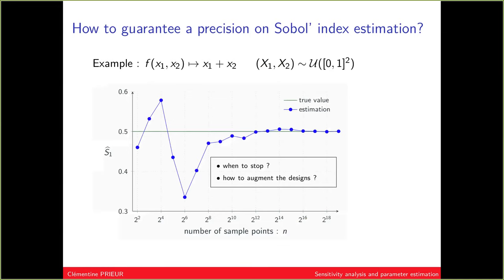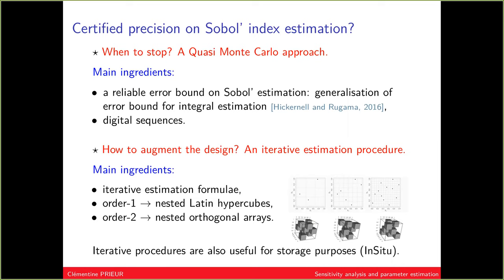Another direction is to guarantee the precision of sensitivity measure estimates and to enrich the design of experiments adaptively — stopping when the sensitivity measure is well estimated. For that, we need an iterative estimation procedure with nested designs of experiments, such as nested Latin hypercube sampling or nested orthogonal arrays. This is another way to reduce the cost of measuring sensitivity.